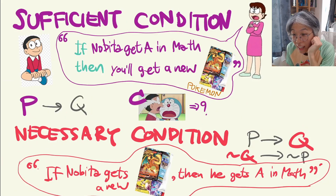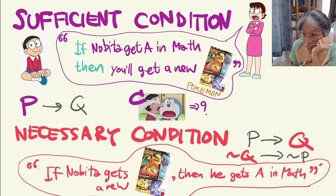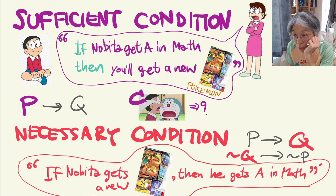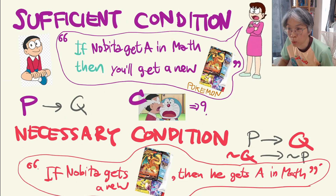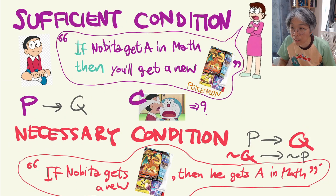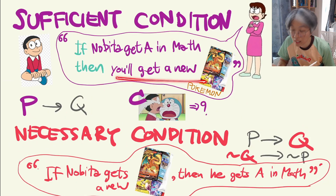Today let's check if you understand logical statements correctly. Let's look at Nobita from Doraemon. He's studying for an exam and his mom wants to make sure he passes it this time. So she puts an incentive — a statement that if Nobita gets an A in math, then he will get a new Pokemon card.